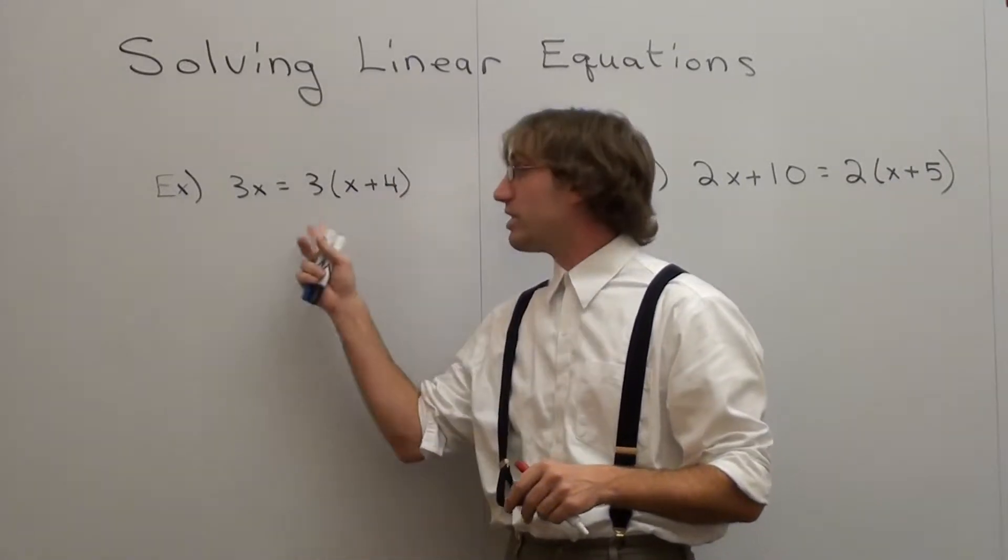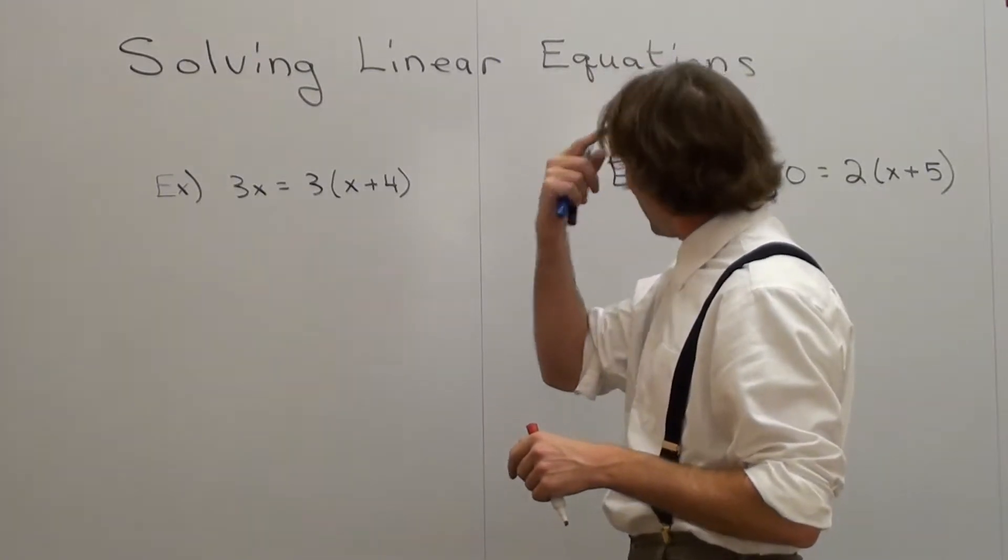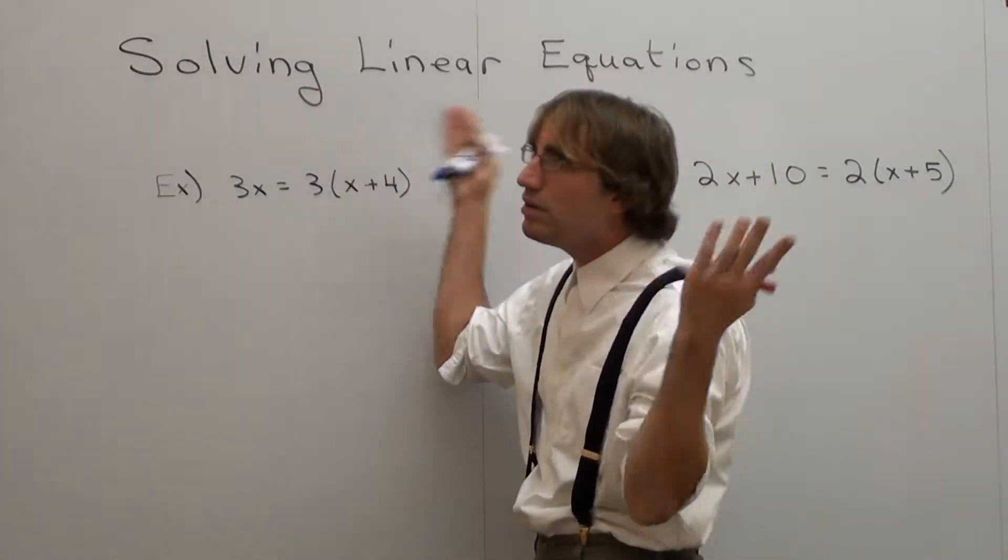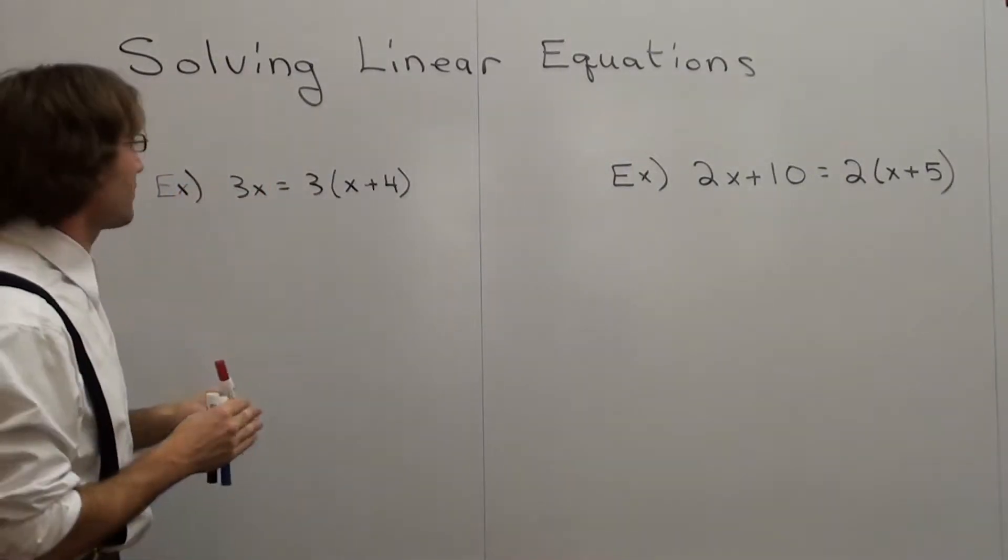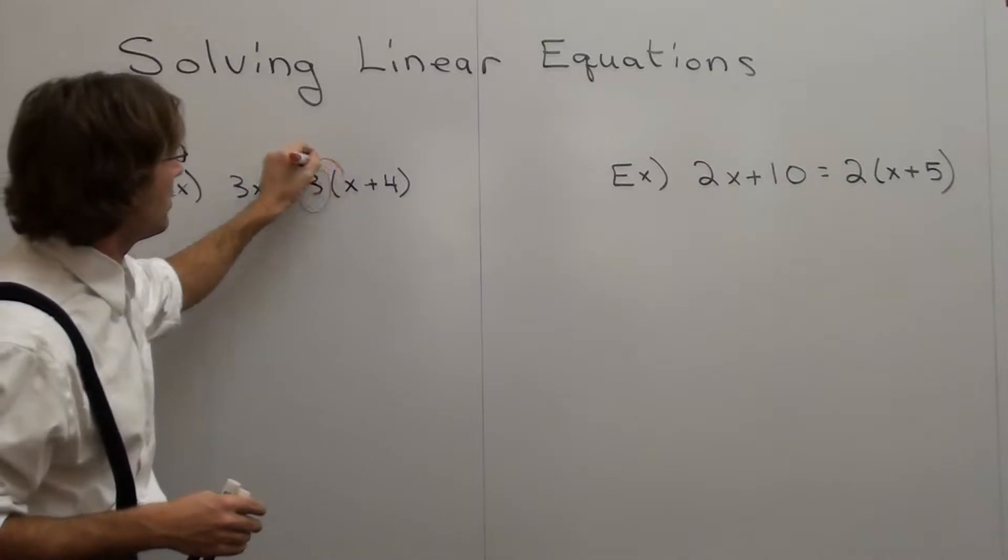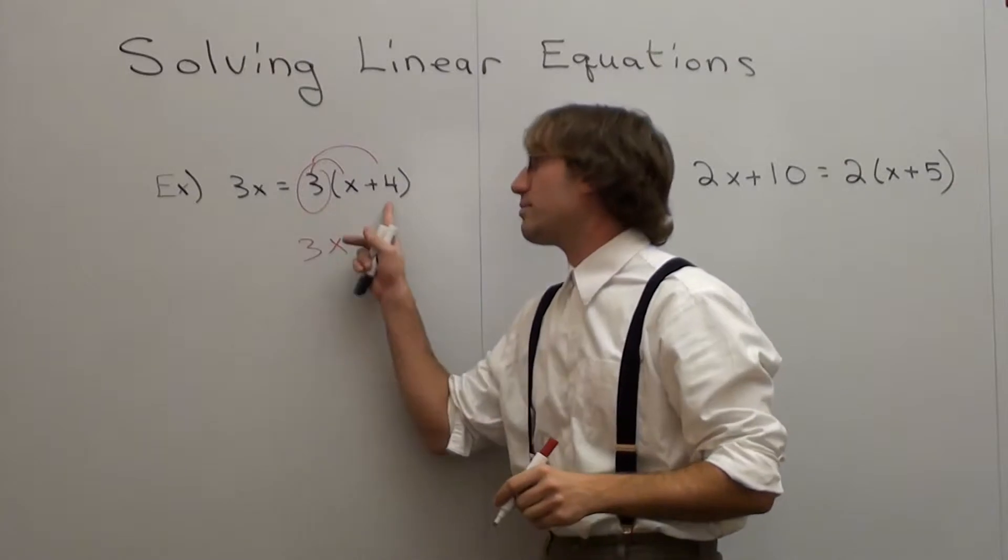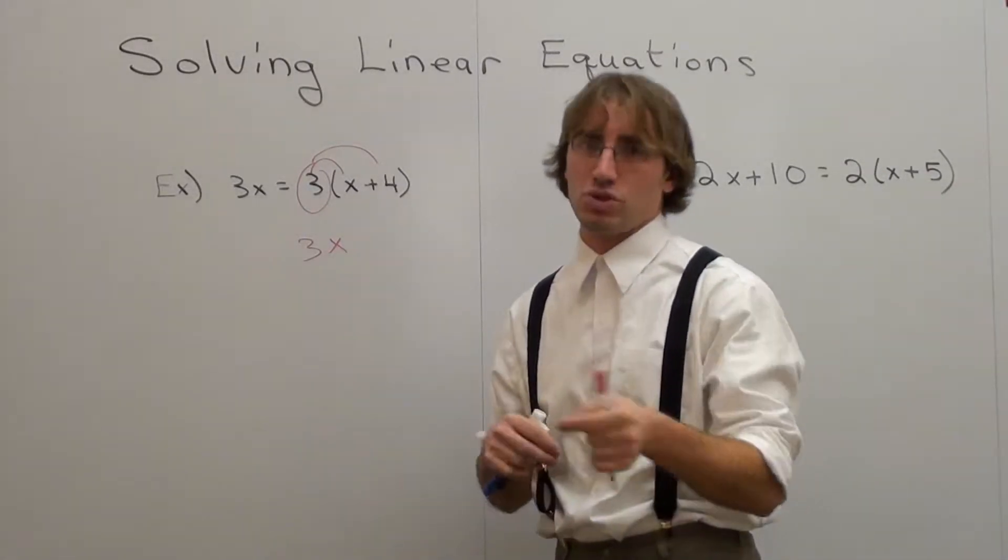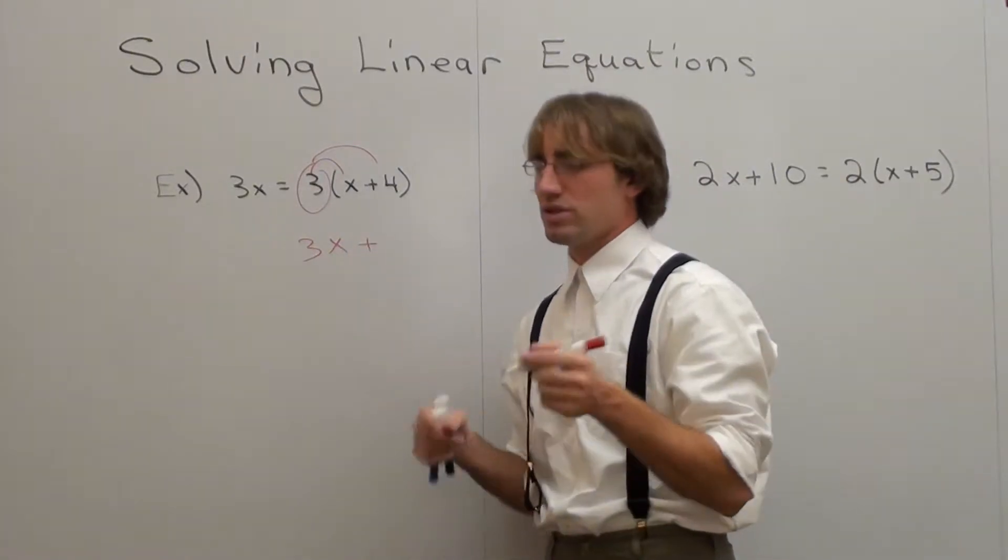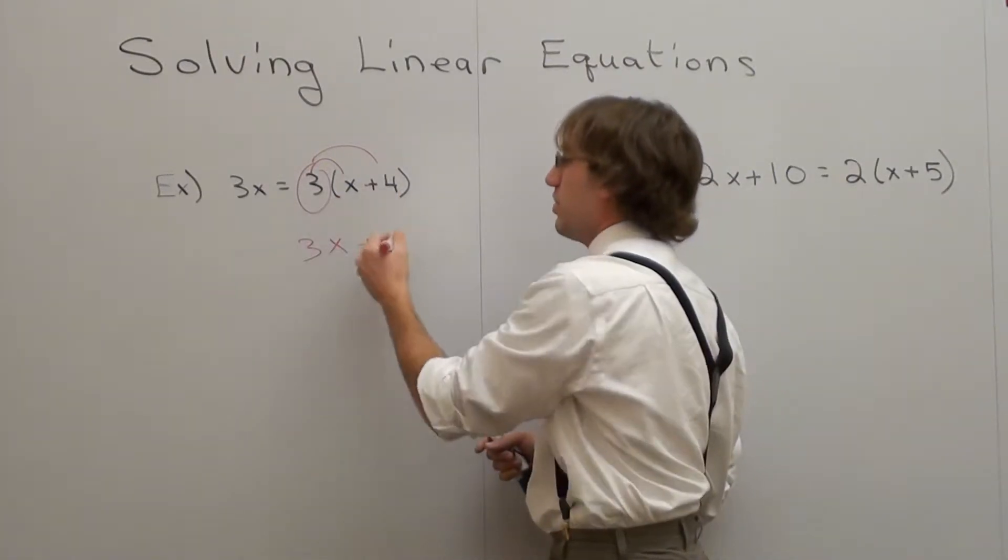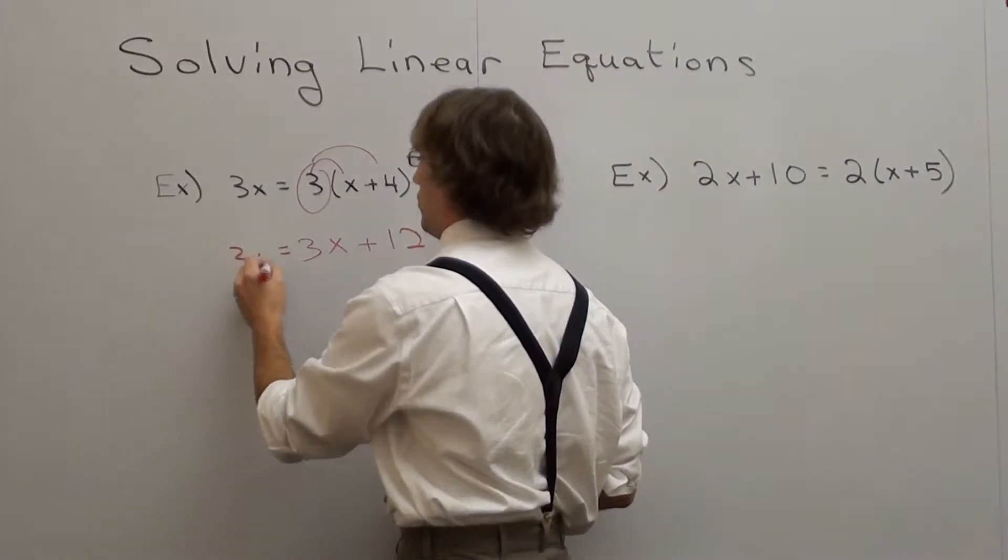I want to solve this problem. Well, I can't do anything on the left side. I can distribute on the right side. So that's what I'm going to do. 3 times x is 3x. And 3 times 4. You've got to tell me if it's positive or negative. Positive. Because I have so many students who write 3x12. No, it's 3x plus 12.